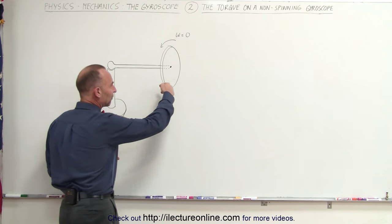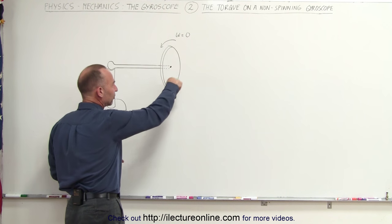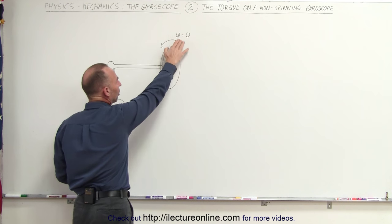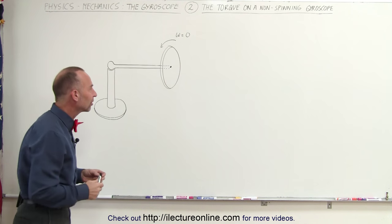Normally a gyroscope would have a spinning disk here which would be spinning in this direction, but let's call that omega, the angular velocity. At this moment, omega equals zero.